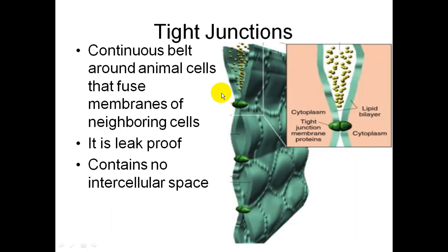The last type is tight junctions. This is a continuous belt around animal cells that fuses the membranes of neighboring cells together. It is leak-proof — fluid cannot go through it, and it contains no space between it.